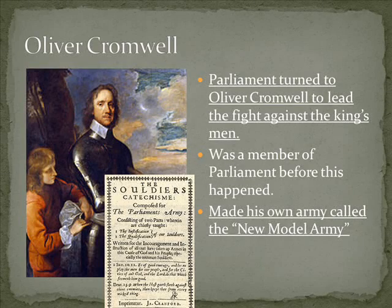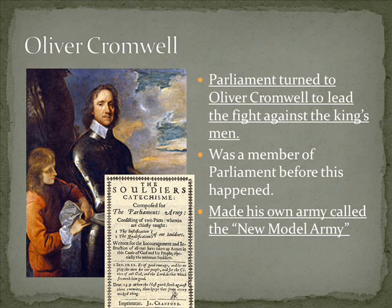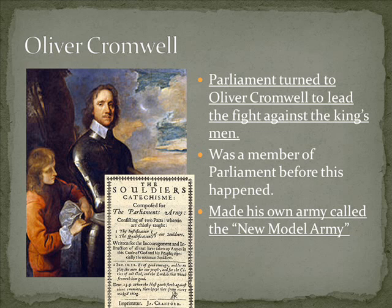Parliament wanted a big, strong leader to lead them against the king. Obviously, the king comes in with some big benefits — he's over the main army, he has the money, which is a major benefit. So Parliament needed a man's man, a real leader of men, somebody that everyone in England could look up to, to take the fight to the king. So Parliament turns to a rather interesting character in history named Oliver Cromwell, and asks for him to lead the fight against the king and the king's men.